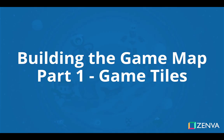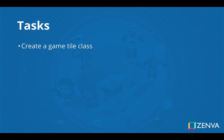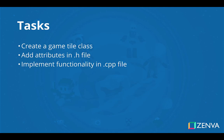Welcome back. In this section we're going to start building the game map mini-series. This is part one, focusing on the game tile class itself. We'll be using these game tiles to construct our entire game map in an 8x8 grid. In this section we'll first create the game tile class, creating .h and .cpp files where we'll add the attributes and function signatures in the .h and the actual functionality in the .cpp files. This will be fairly straightforward. Let's head to the code and get started.